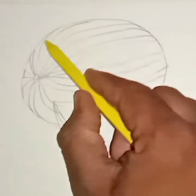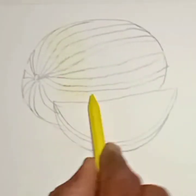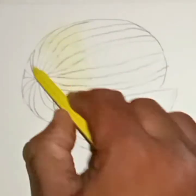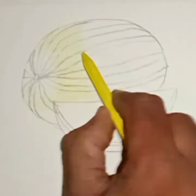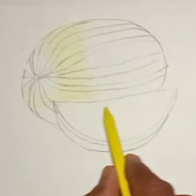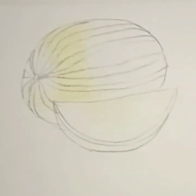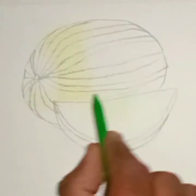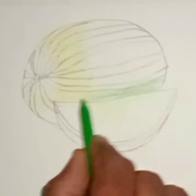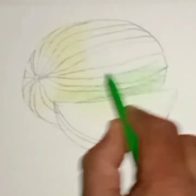Drawing is done. Now it's time to fill color. First we will use yellow color. Like this we will apply yellow color. And now we will use light green color. Like this we will apply light green color.